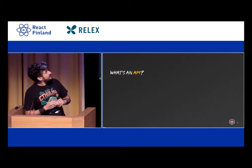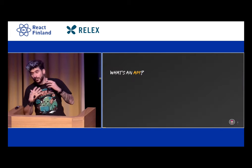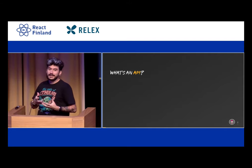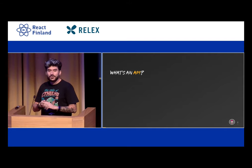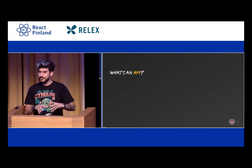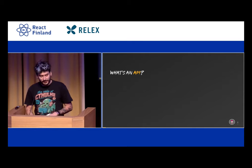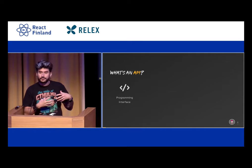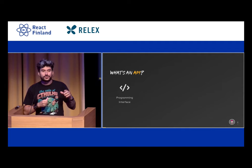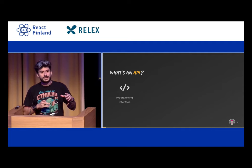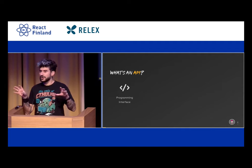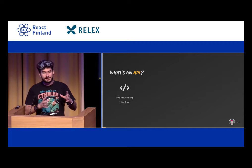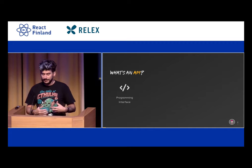Let's start with: what is an API? You're all more or less familiar with this specific term, but first of all, an API is a programming interface, meaning that you are defining a way to help two different elements, two different components of your architecture to talk together.